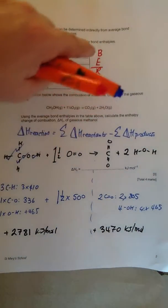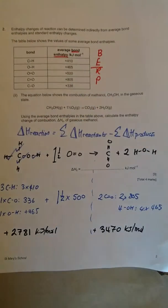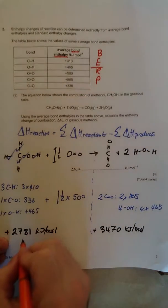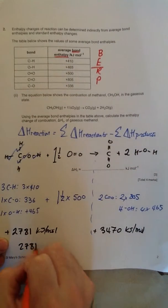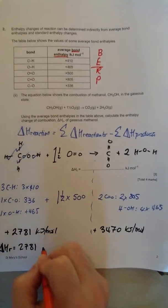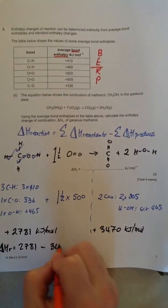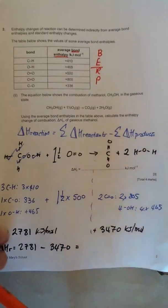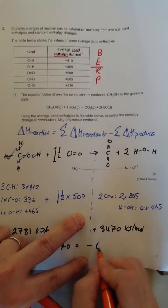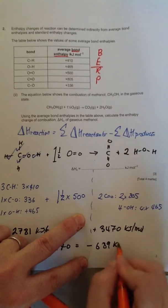Now we use bond enthalpy calculations to work out the energy change of a reaction. It's reactants minus products. So the reactants are 2781, so delta H reaction minus 3470, which gives us an overall reaction enthalpy change of minus 689 kilojoules per mole.